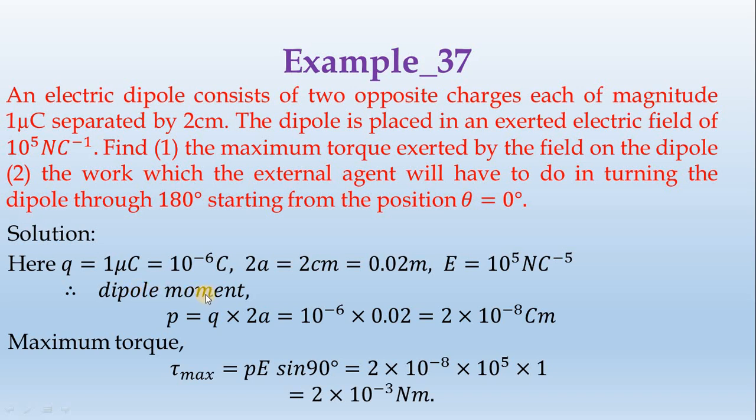Dipole moment is rising. That dipole moment P equals Q times 2A. Q times 2A is 2 into 10 to the power minus 8 coulomb meter. Electric field value minus 1, newton per coulomb.